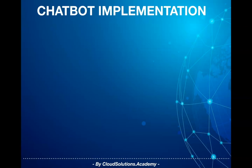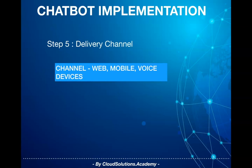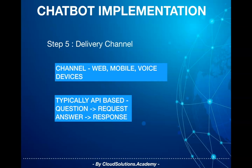Once you have implemented the chatbot, the next step is to pick a delivery channel. In this step you decide how to expose the chatbot to end users through the required channel. The channel can be web, mobile, or voice-enabled devices. The chatbot implementation would typically expose an API to ask questions and get responses, which can be called by any channel implementation. You can also release your chatbot over third-party services like Facebook Messenger or voice-enabled services like Amazon Alexa.